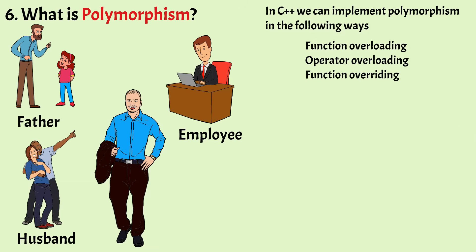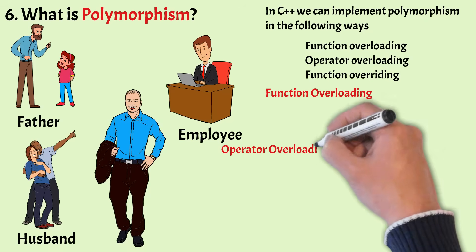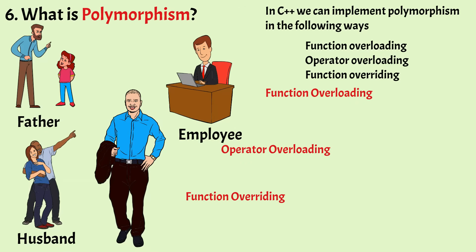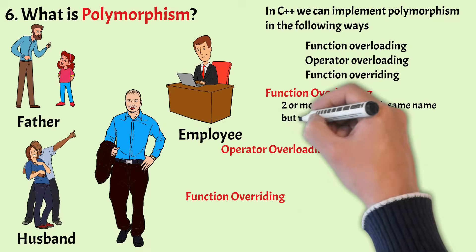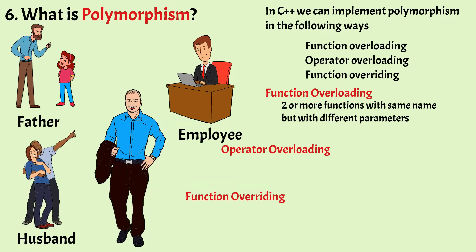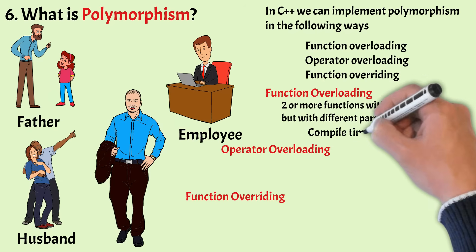Now let's try to understand each of them. The first one is function overloading. In C++, you can have two or more functions with the same name, but each function with different parameters. Depending on the number of arguments or type of arguments supplied when calling a function, the function with matching parameters is called. Function overloading is a type of compile time polymorphism.